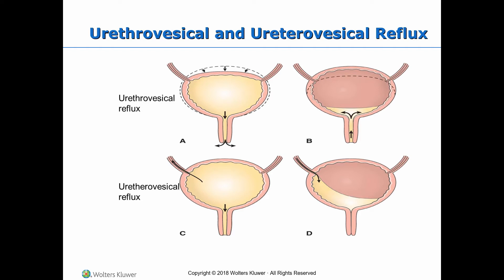Urethrovesical reflux: with coughing, sneezing, and straining, the bladder pressure rises, which may force urine from the bladder into the urethra. Picture A shows when bladder pressure returns to normal, the urine flows back to the bladder, introducing bacteria from the urethra into the bladder. Ureterovesical reflux: with failure of the ureterovesical valve, urine moves up the ureters during voiding and flows back into the bladder when voiding stops. This prevents complete emptying of the bladder and leads to urinary stasis and contamination of the ureters with bacteria-laden urine.